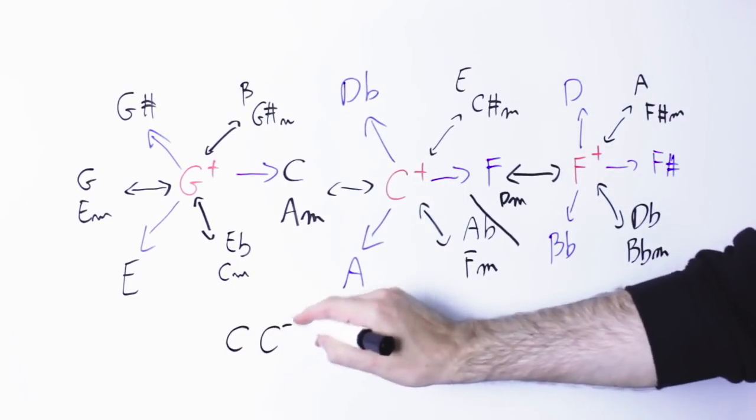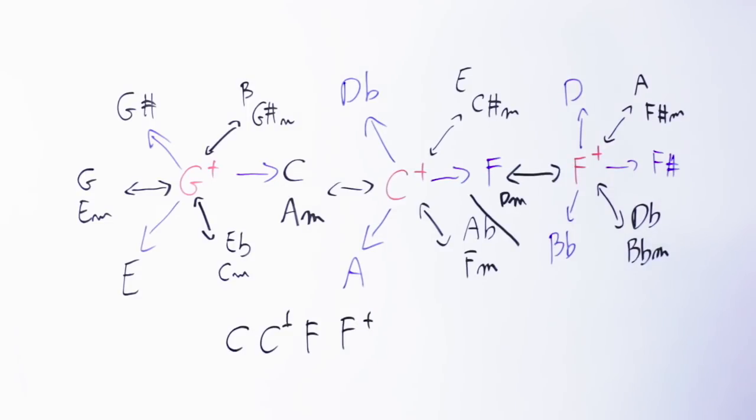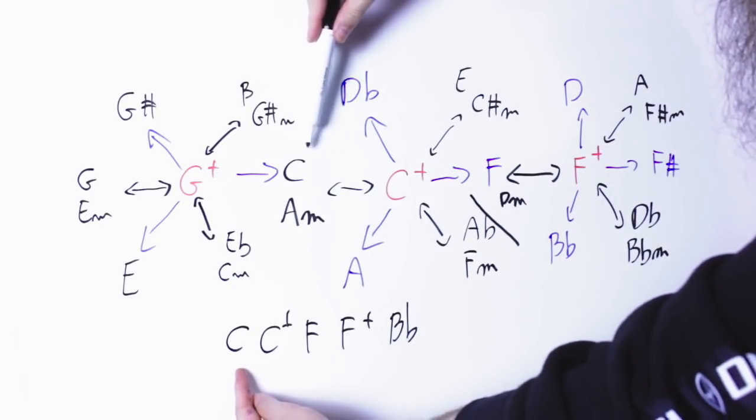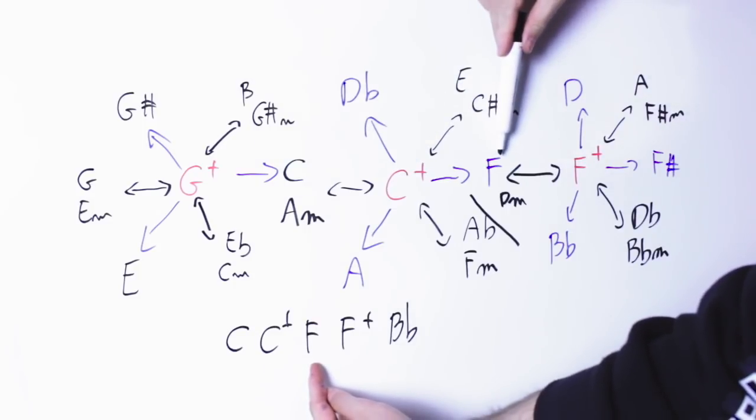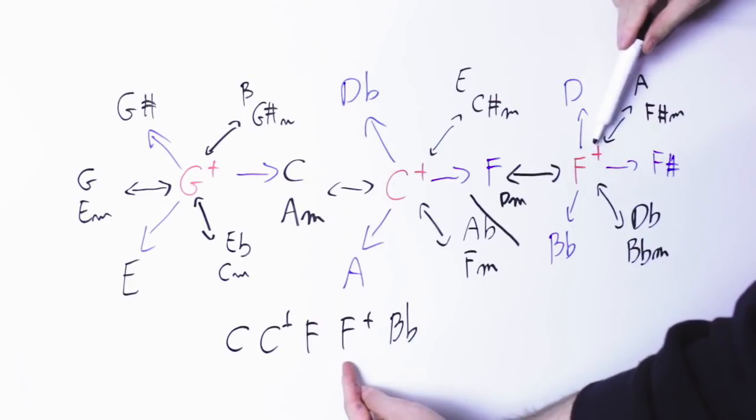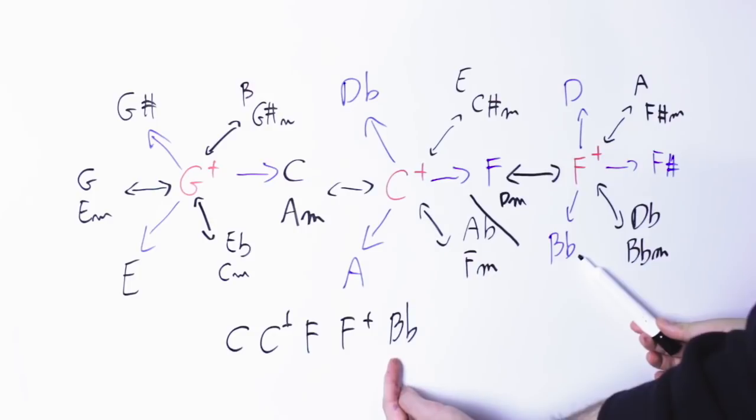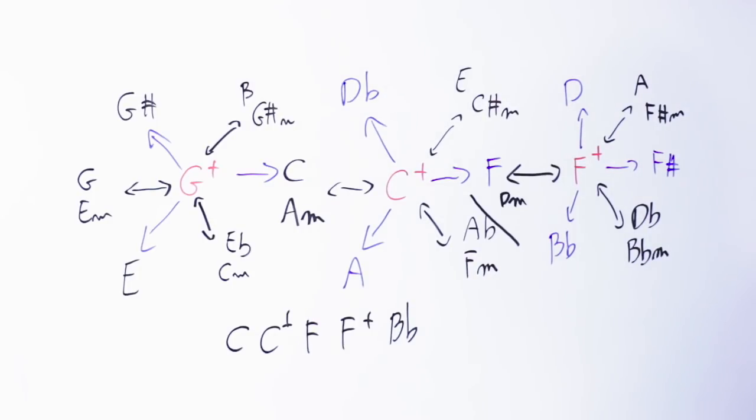So I can do this. I'm starting from C. Go into the C augmented. Resolve into F. Go into F augmented. And then, from there, I go to B flat. You can use these to move from the key of C to the key of B flat, or just to move from the C chord to the B flat chord and then maybe come back to the C major key. It's just a connection between chord. Another example along the same line, I'm starting from C. C augmented. F augmented. D.